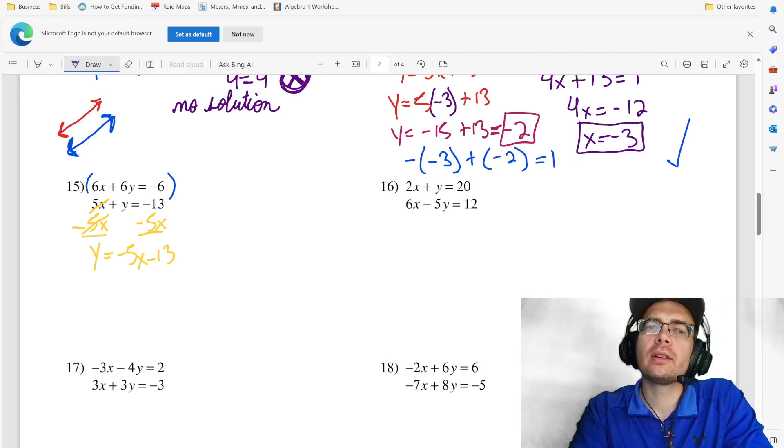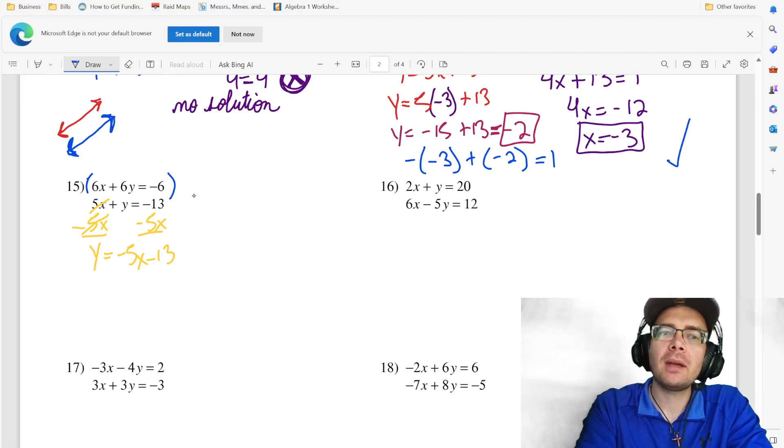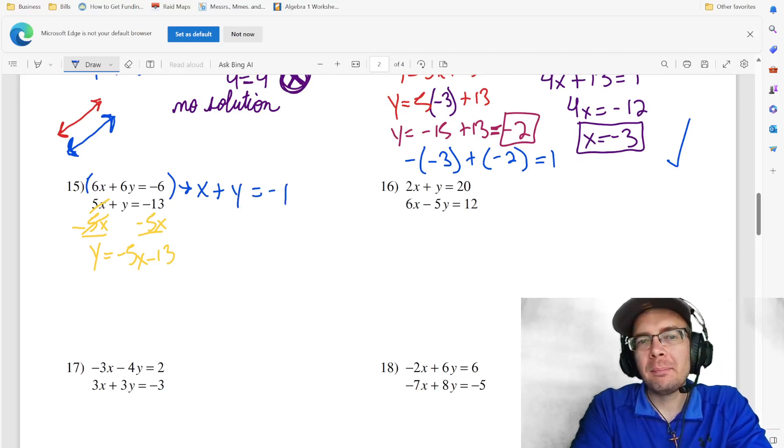And even if they weren't all sixes, as long as they were multiples of six, I could divide all of them by six and make my equation a little easier to digest. So this is going to be x plus y equals negative one. Much easier equation.